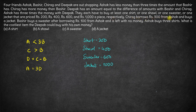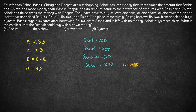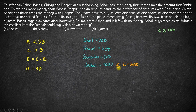Chirag borrows 300 from Ashok and buys a jacket. So the amount with Chirag, which will be C plus 300, must be greater than or equal to 1000 rupees. Once Chirag borrows 300 rupees, he should have at least 1000 rupees to buy a jacket. So C plus 300 should be greater than or equal to 1000.